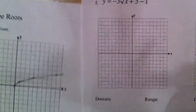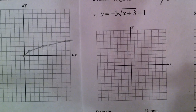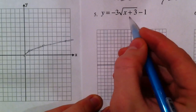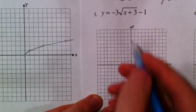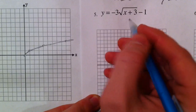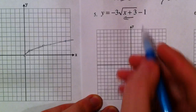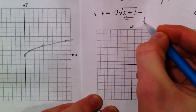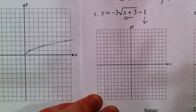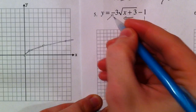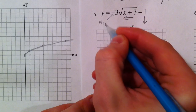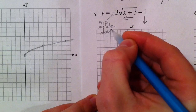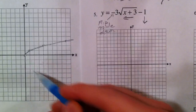Now back to square root: square root of (x + 3) minus one, with a negative three out front. The plus three inside shifts it to the left — the last one had minus three and shifted right, so plus three shifts left. The minus one on the outside, just like our plus three in the first transformation, shifts every single thing down.